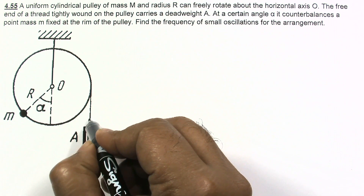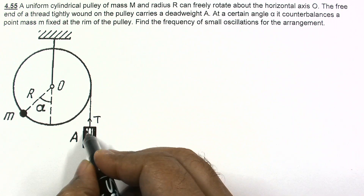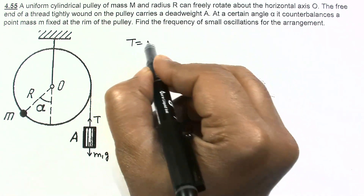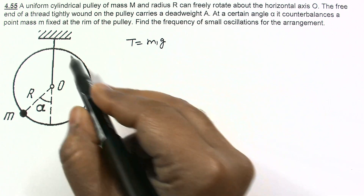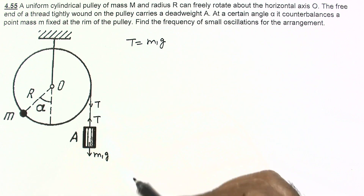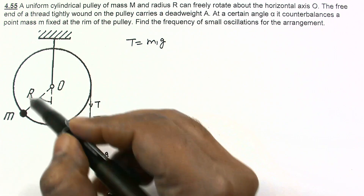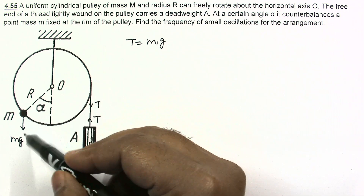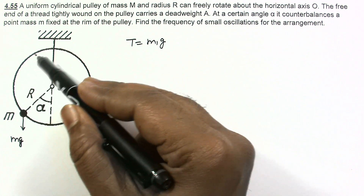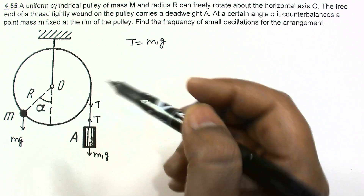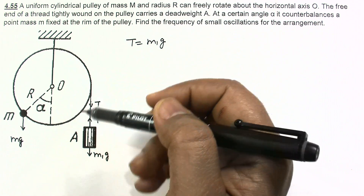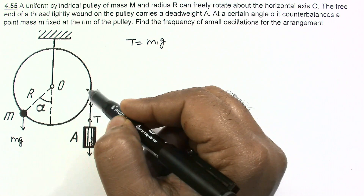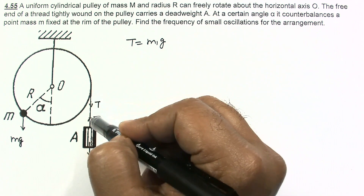For the equilibrium situation, suppose the tension in the string is T. The mass of the dead weight is assumed to be M1, so its weight is M1·G, giving tension T = M1·G. For the pulley, we write the equation for net torque about point O. Net torque should be zero for equilibrium. The torque is due to tension T and the weight Mg of the point mass.